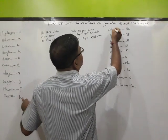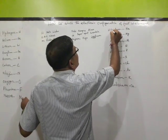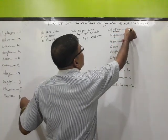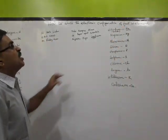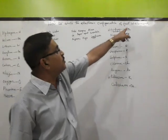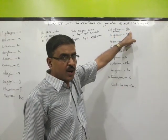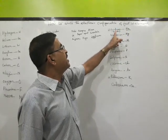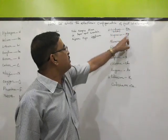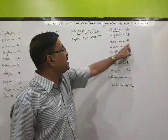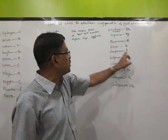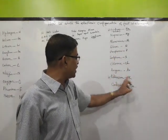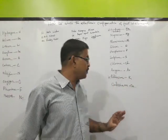Sodium — its symbol is Na, from its Latin name Natria, not SO. Magnesium is Mg, aluminum is Al, silicon is Si, phosphorus is P, sulfur is S, chlorine is Cl, argon is Ar, potassium is K, and calcium is Ca.